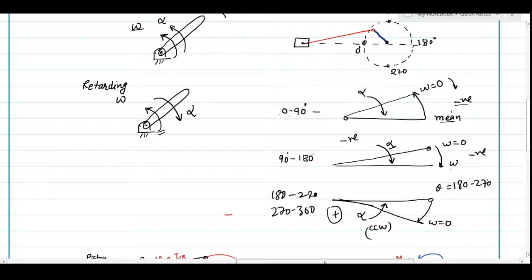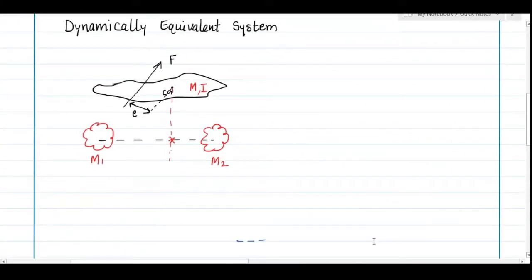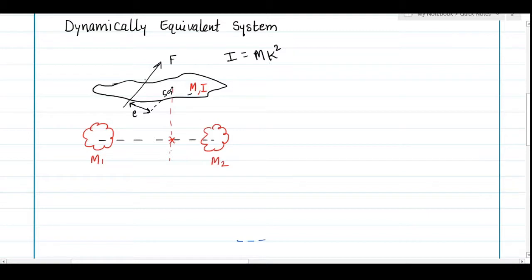The second important concept is the dynamically equivalent system. Suppose we have a body of arbitrary shape; its centroid, mass m, and moment of inertia about the centroidal polar axis is I, where I equals m times k², and k is the radius of gyration. Applying a force F at perpendicular distance e from the centroid causes both linear acceleration and angular acceleration. We want to make an equivalent system by breaking the body into two point masses, finding their values and positions while maintaining the same dynamic effect.